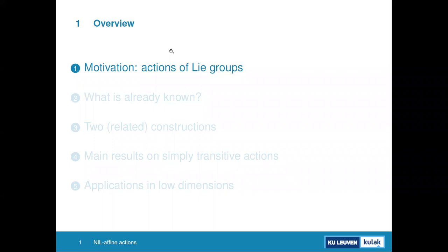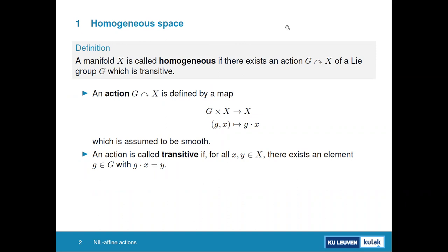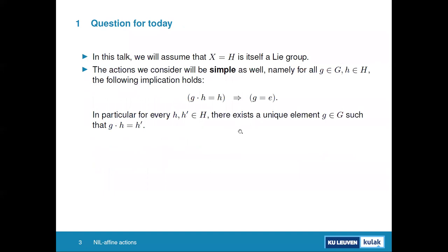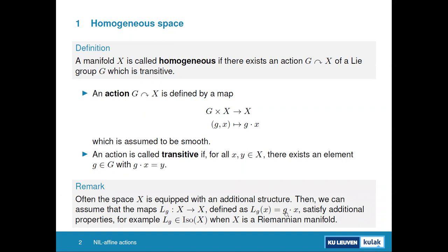Let me start with the definition of a homogeneous space. A homogeneous space is a manifold where you have a transitive action of a Lie group — a smooth map from the product satisfying additional properties, where from any point in your space you can reach any other point via the action.